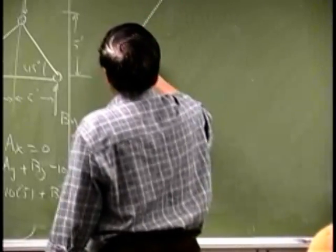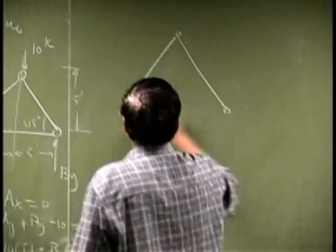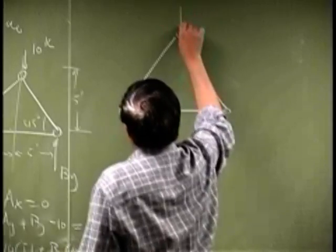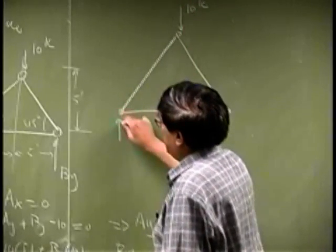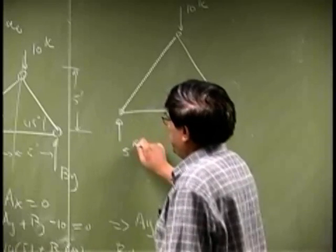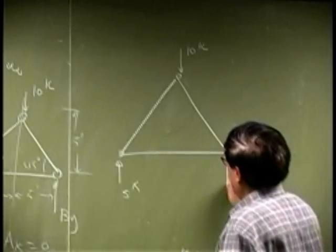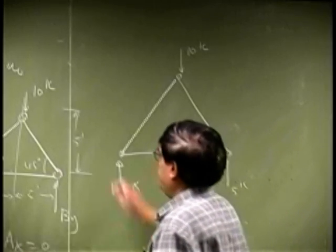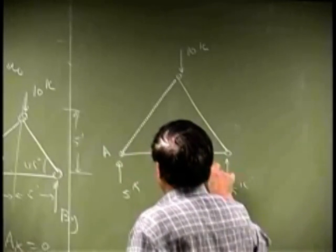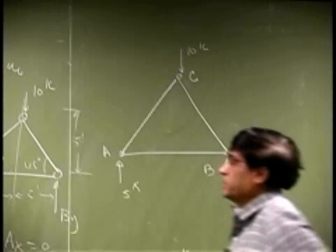This will be the same truss. You have a force here which is 10 kips, then you have a reaction here plus 5 kips, and you have a reaction here plus 5 kips, with this point being A, this joint being B, and this joint being C.